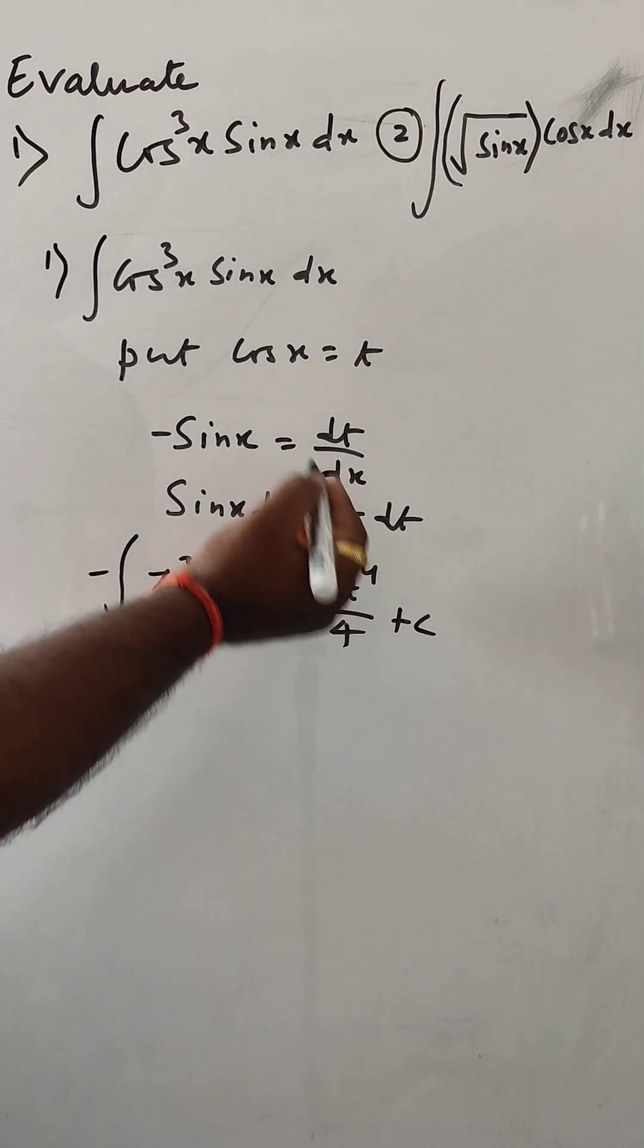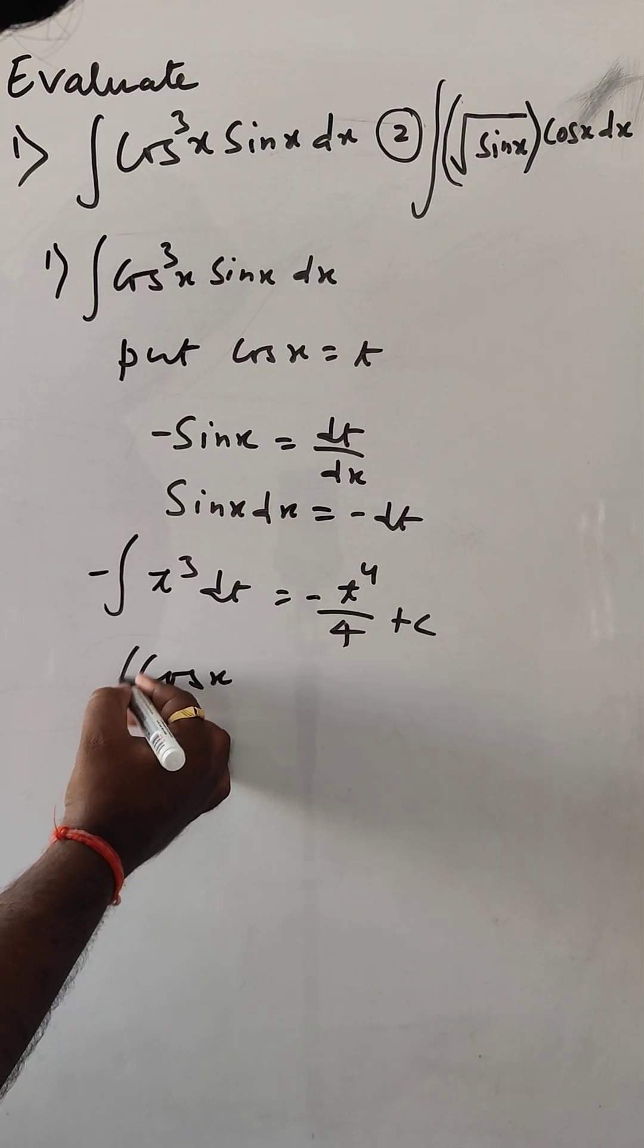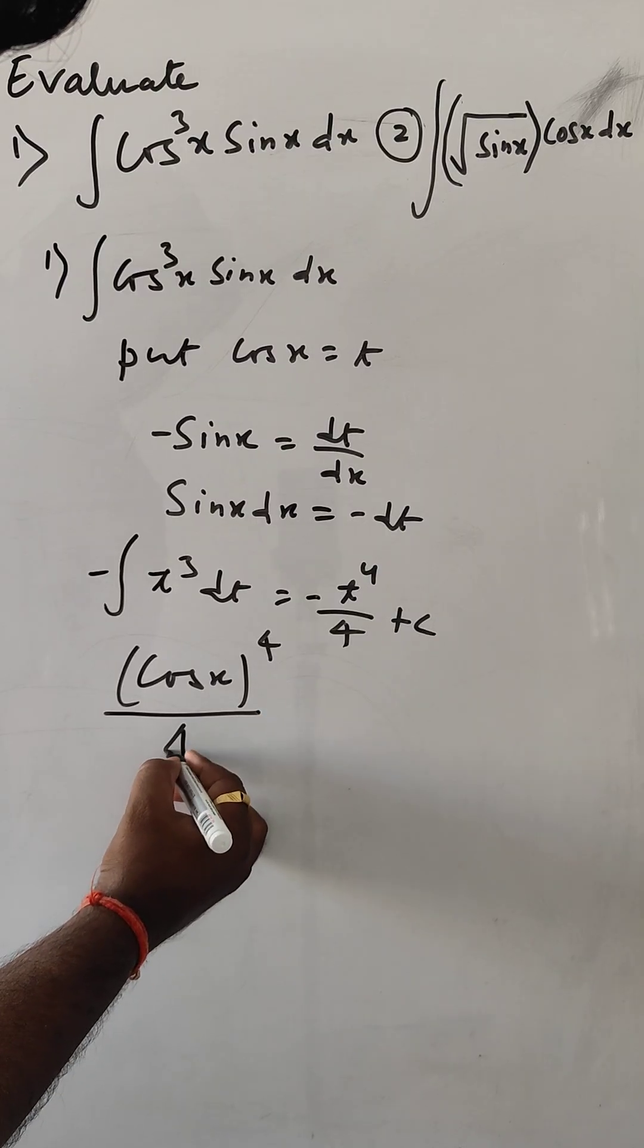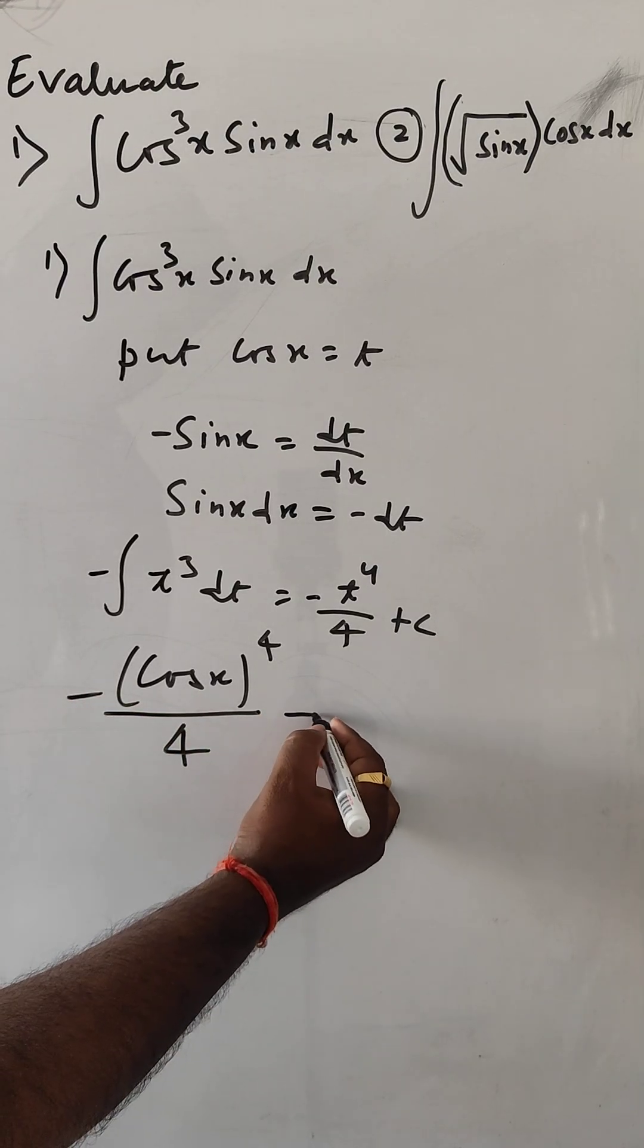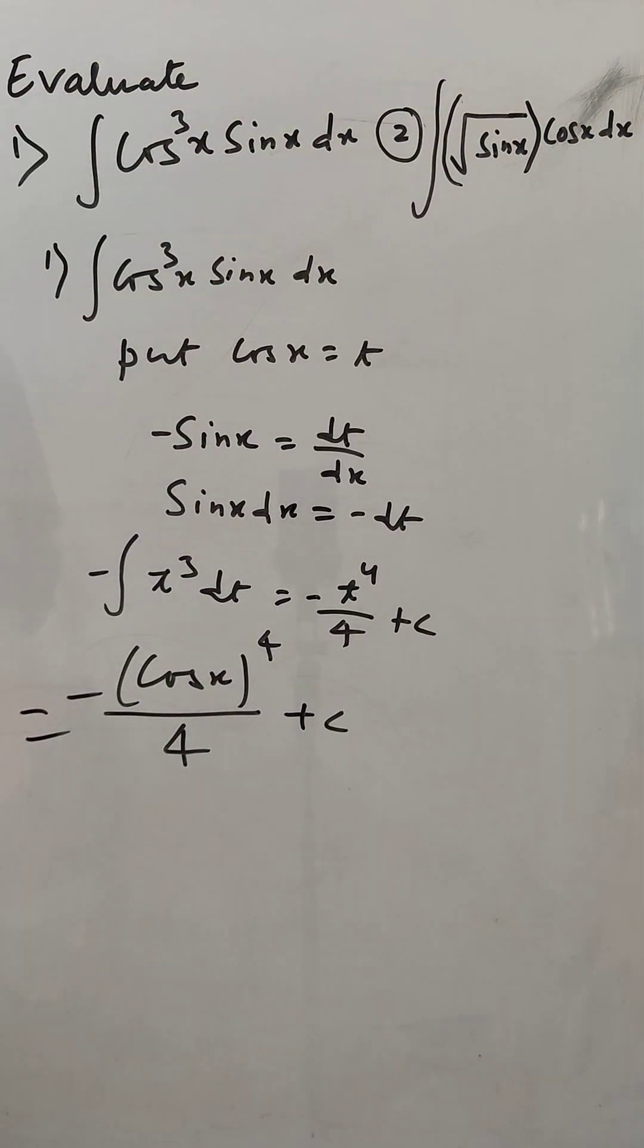The value of t is cos x. So it is minus cos^4(x) divided by 4 plus C. This is the answer to your first problem.